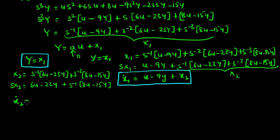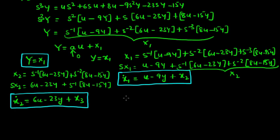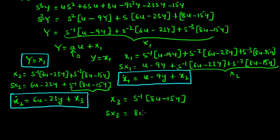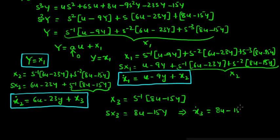In time domain, x2-dot equals 6u minus 23y plus x3, where x3 is a new state variable. And x3 in the s domain equals s-inverse times (8u minus 15y), so in time domain x3-dot equals 8u minus 15y. This is the final important expression.